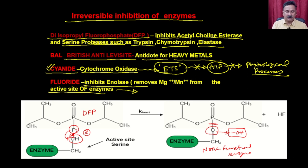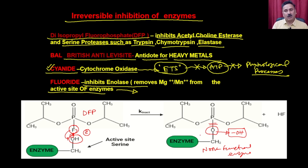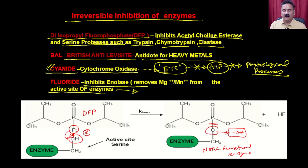This crucial amino acid in the active site participates in the reaction. Once DFP forms the covalent complex, the enzyme is converted from a functional to a non-functional enzyme. This is the classical way in which irreversible inhibitors inhibit the enzyme.